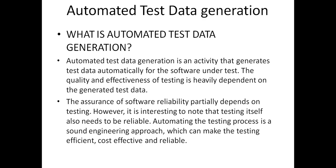It is interesting to note that testing itself leads to reliable automating of the testing process, which is a sound engineering approach that can make decisions cost-effective and reliable. Basically, both manual testing and automated testing are happening. But in manual testing, we need to write the test data manually — we need to create statements based on the inputs of the selected test, the state document, and the source code of the software. But in automated testing, we also need to generate test data.